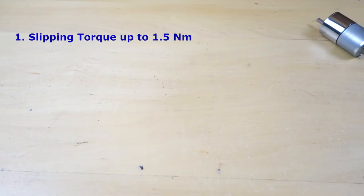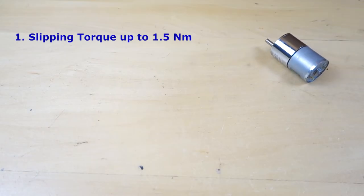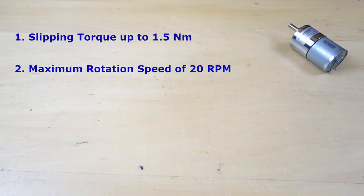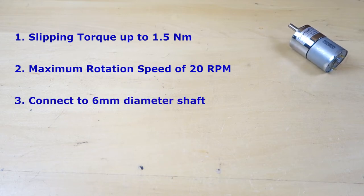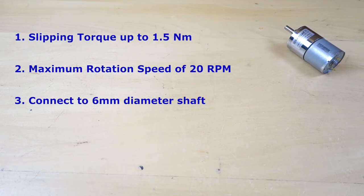All of this boils down to the following critical information for our torque coupling. One, the slipping torque needs to be up to 1.5 newton meters. Two, the maximum speed is 20 revolutions per minute. Three, interface to the coupling is a 6 millimeter diameter shaft. Finally, we are ready to begin the design.